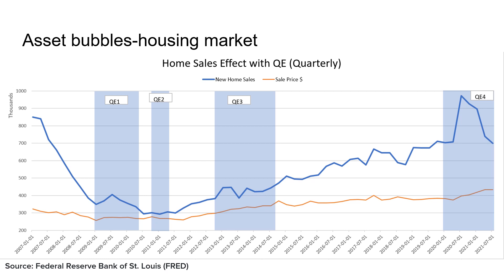Looking at the housing market, we can really see — especially in the fourth round of QE starting in 2020 — that this huge jump in house sales and home prices has been a major factor. That could be due to people wanting to take advantage of low mortgage rates — about 2.25% on a 30-year, which is at its absolute lowest. So it's a great time to buy a house, and a lot of people are doing that. People are also moving because of the pandemic, which drives house sales up.